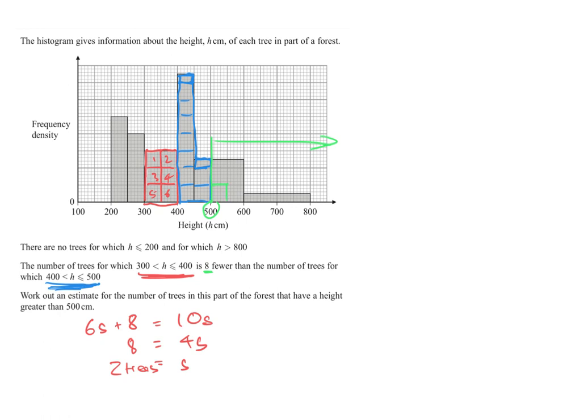So we have 1, 2, 3, 4, 1, 2, 3, 4. We have 2 halves above, so that makes 5. We have 2 halves here, that makes 6, and 2 halves here, which makes 7. So there are 7 squares that are greater than 500 centimeters.